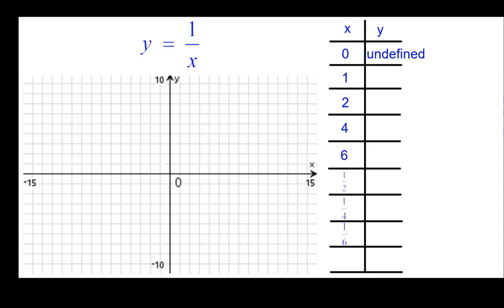Alright, so here are the values that you should have received. If you need to press pause, do so. You'll notice that the product of x and y is always what number? 1, except for when we put in 0. So these are reciprocals.